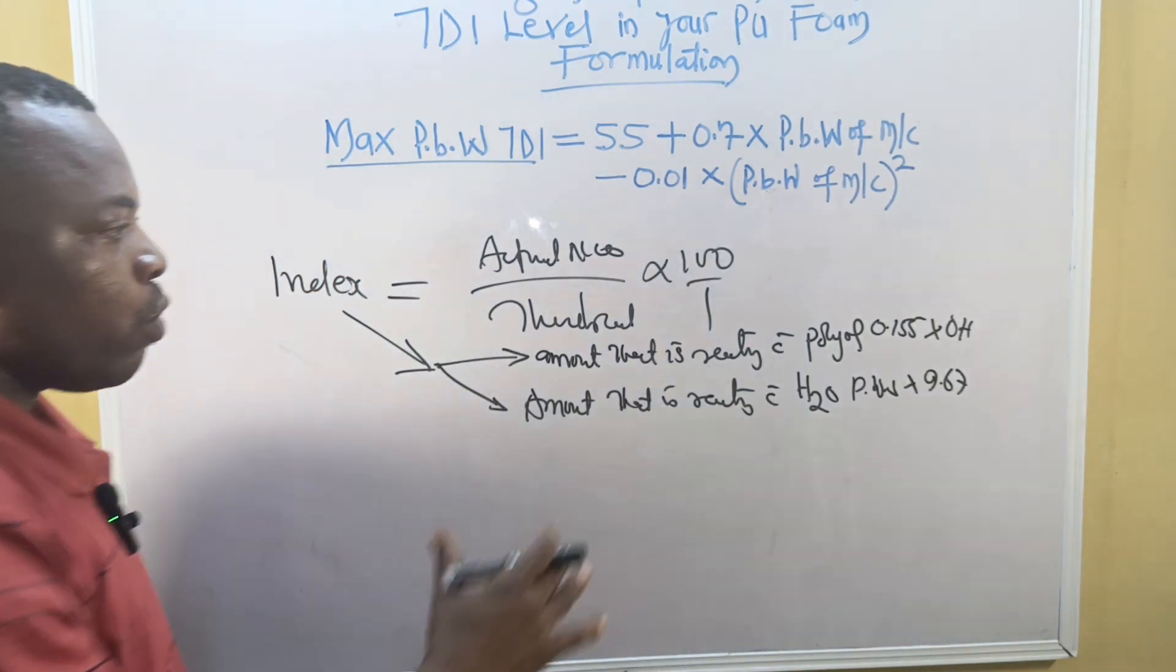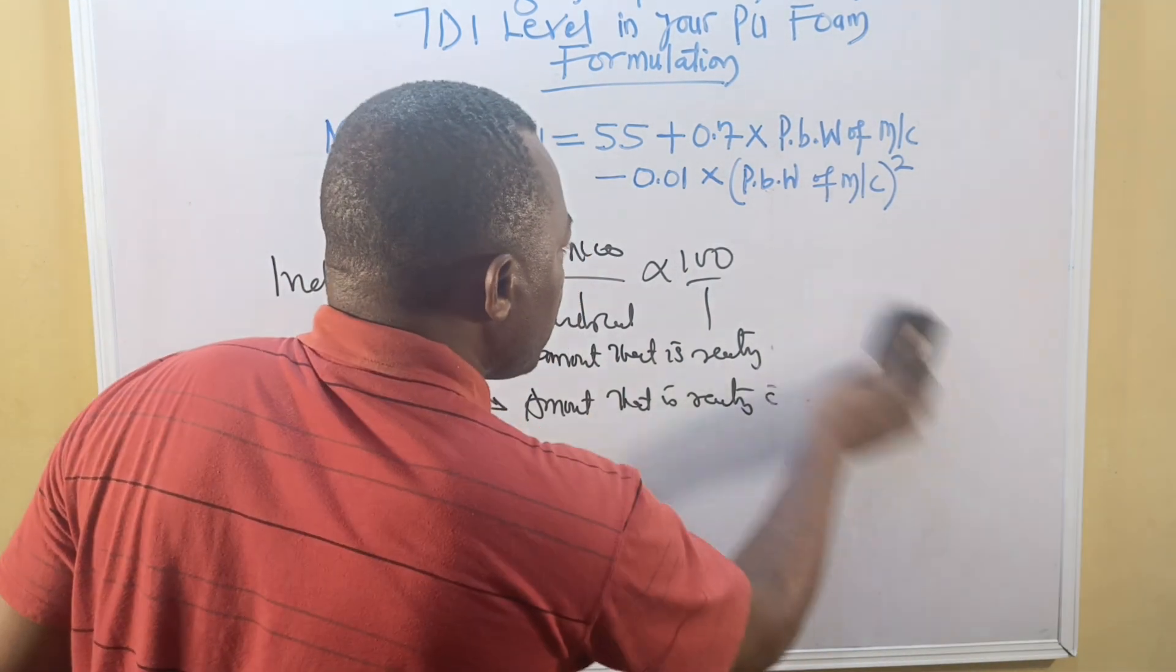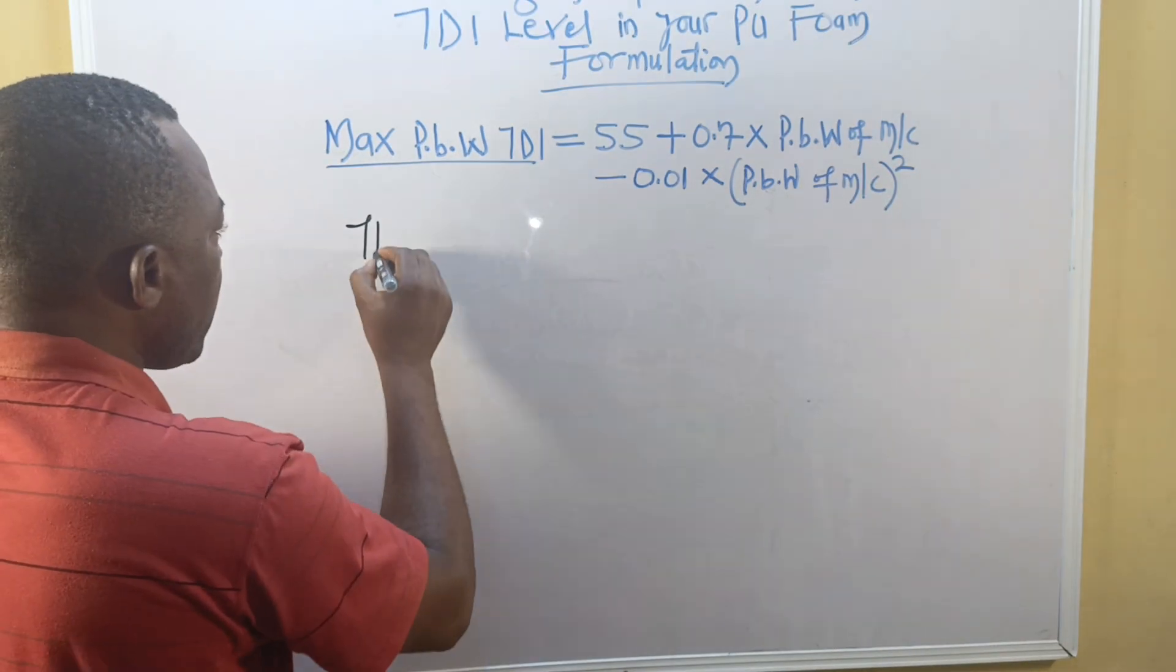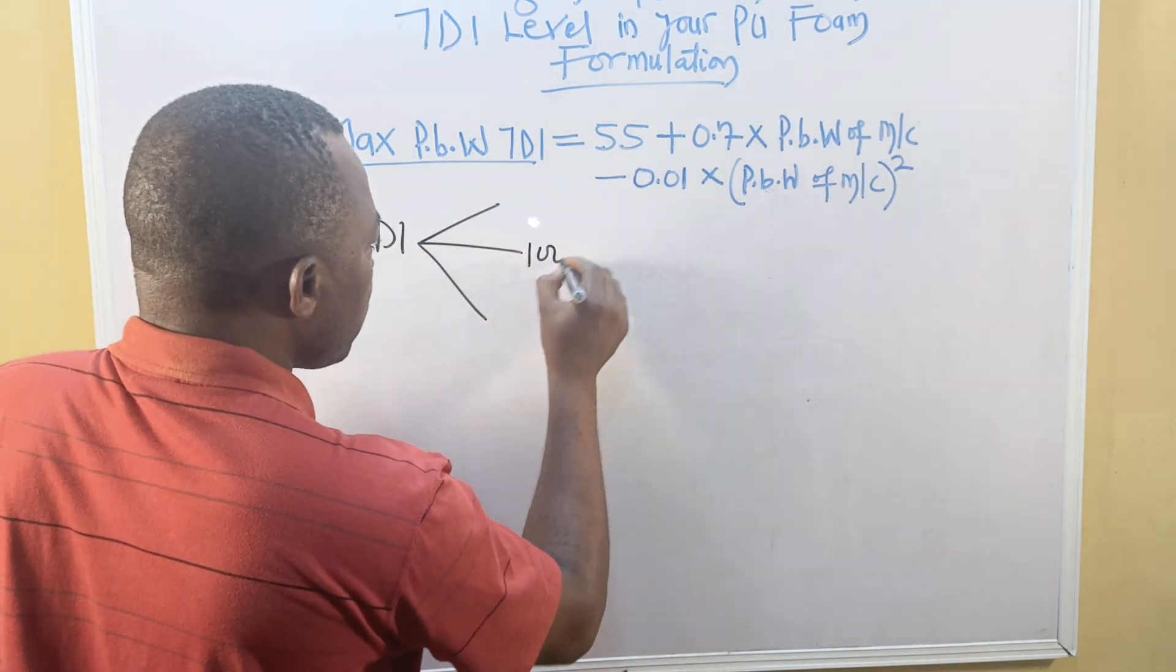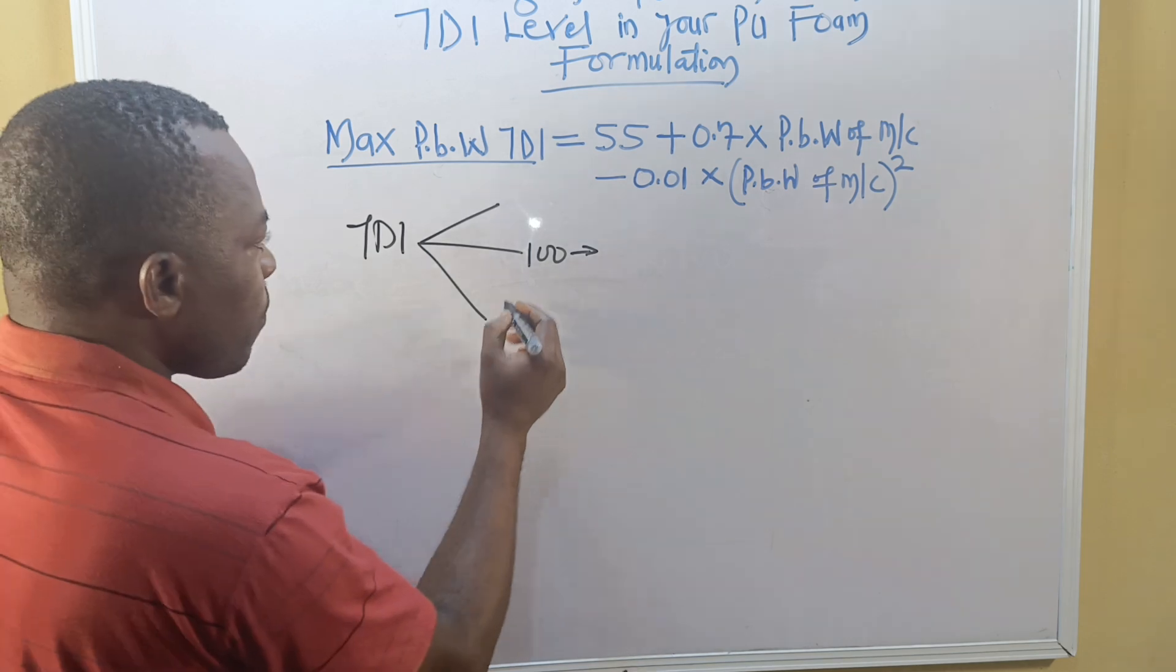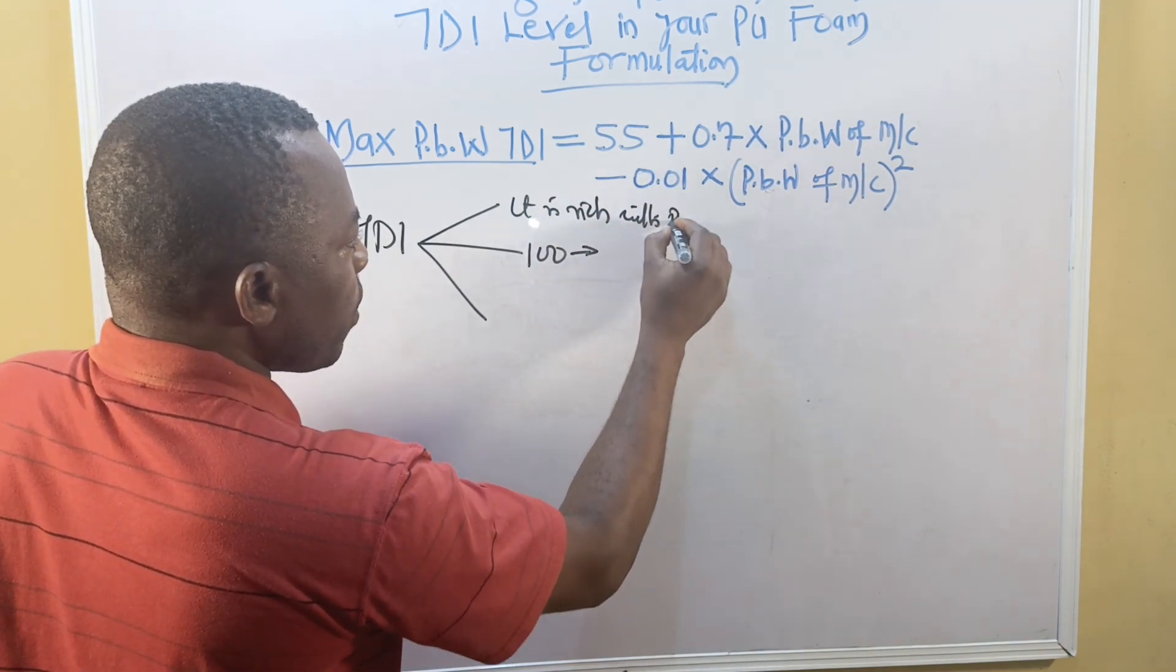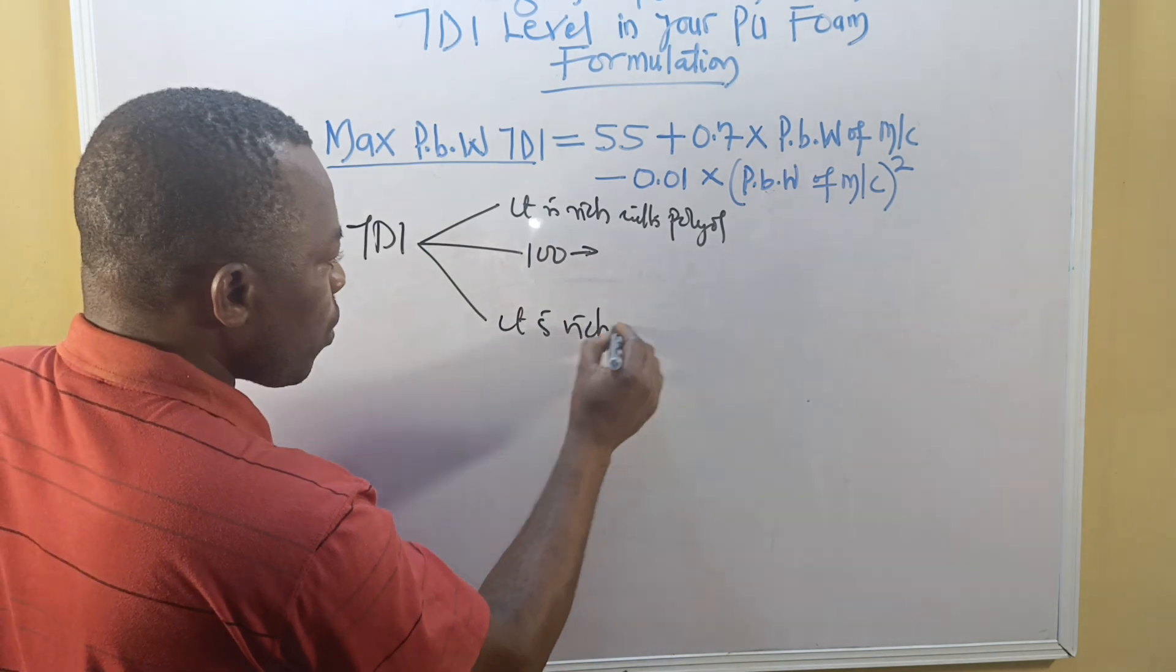For water, you use part by weight of water times 9.67. These are the constants. When you are fixing your parameters, you now choose your index.